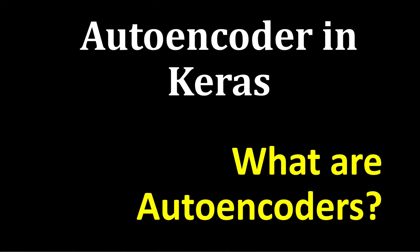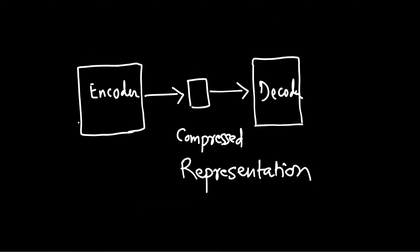So let's first understand what an autoencoder is. An autoencoder is a data compression technique. This architecture consists mainly of two parts — the first part is the encoder and the second part is the decoder. This middle layer contains the compressed representation.